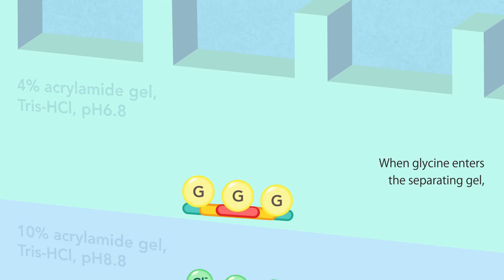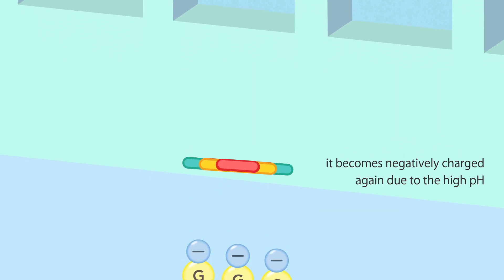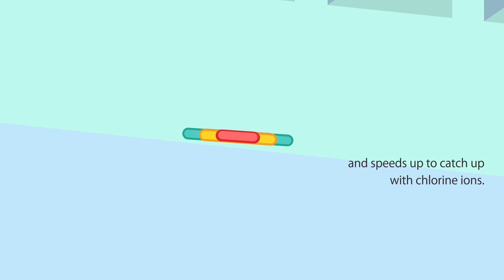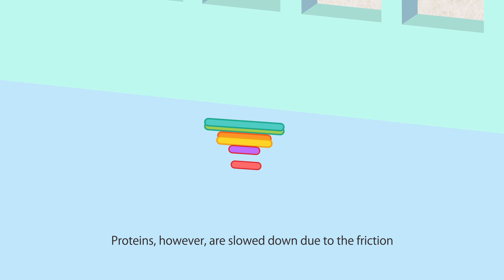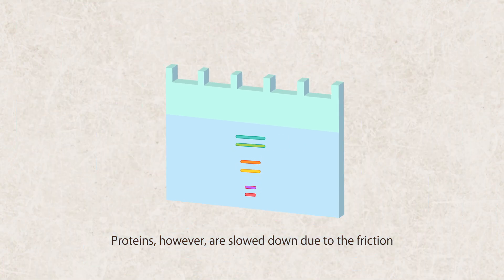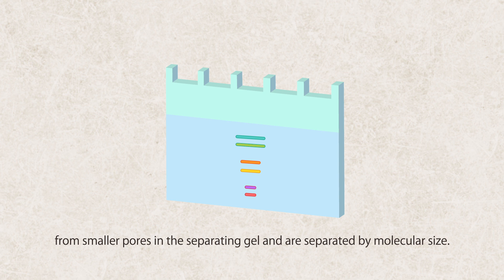When glycine enters the separating gel, it becomes negatively charged again due to the high pH and speeds up to catch up with chlorine ions. Proteins, however, are slowed down due to the friction from smaller pores in the separating gel and are separated by molecular size.